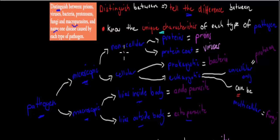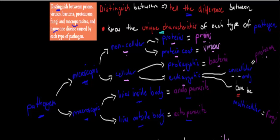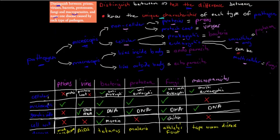Microscopic pathogens are either noncellular or cellular. Noncellular ones include prions (made only of protein) and viruses (protein coat with DNA inside). Cellular ones include bacteria (prokaryotic, unicellular) and protozoa and fungi (eukaryotic). Protozoa are always unicellular, whereas fungi can be unicellular but are often multicellular. You should know a table comparing features: prions and viruses are noncellular; bacteria are unicellular prokaryotic; protozoa are unicellular eukaryotic; fungi are eukaryotic and can be multicellular; macroparasites are always multicellular eukaryotic.